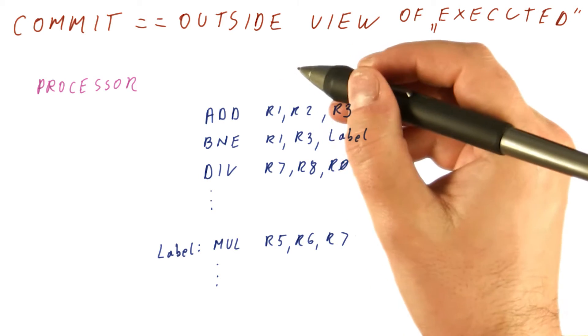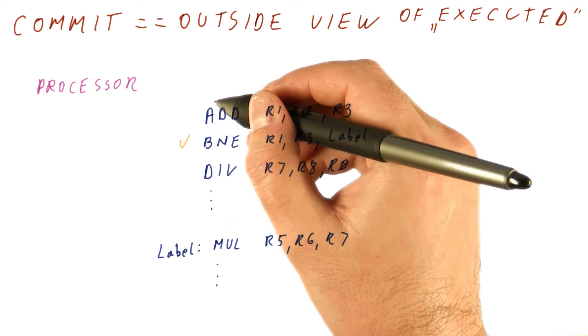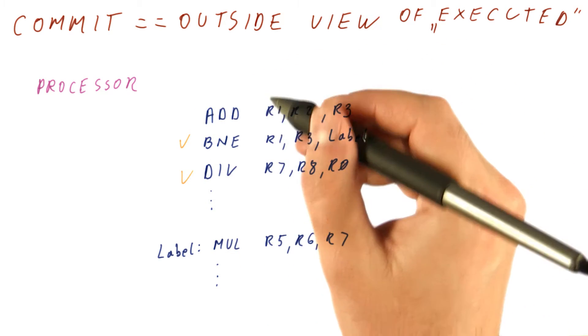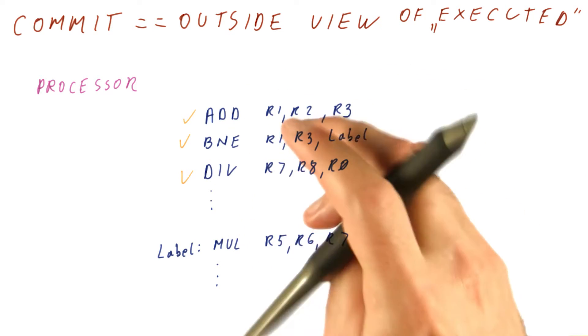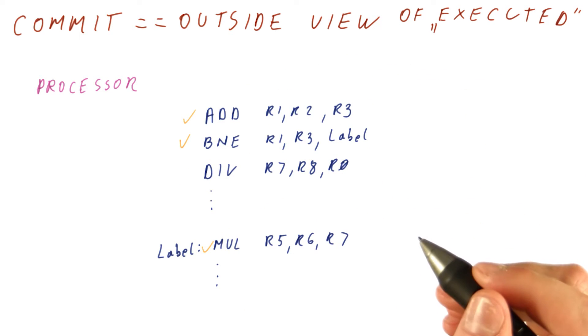As far as the processor is concerned, it could look like we first did this, then we did this, then we finally did this, resolved the branch, undone this, done this.